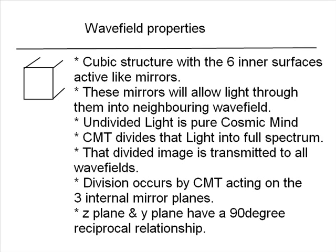I'd like to recap some of the properties that the cubic wave field must possess in order to act as a cosmic projector. The internal surfaces of the cubic wave field are mirrored. This facilitates light to bounce backwards and forwards across a wave field. But the mirrors will also allow light to pass through them into neighbouring wave fields.